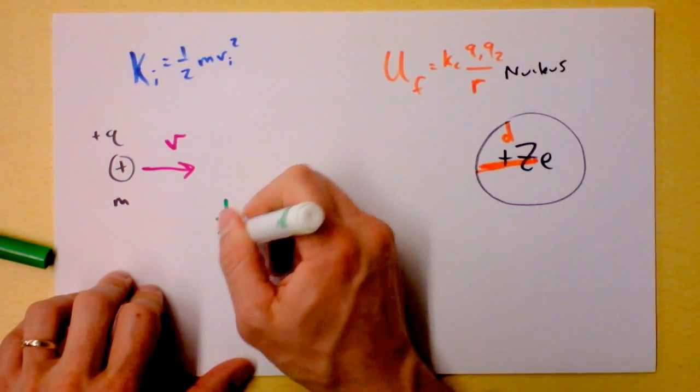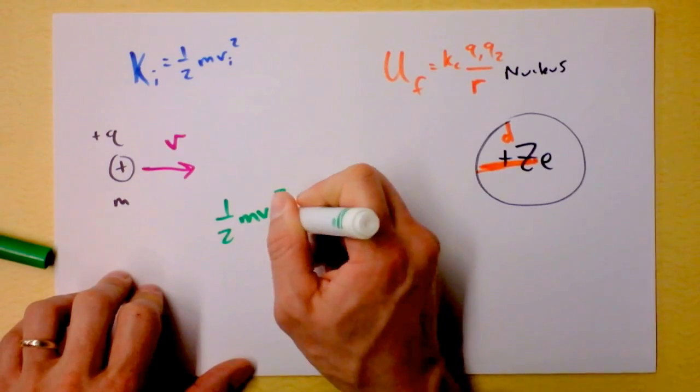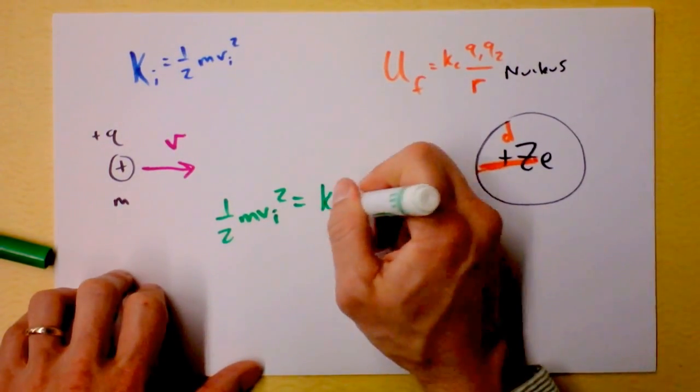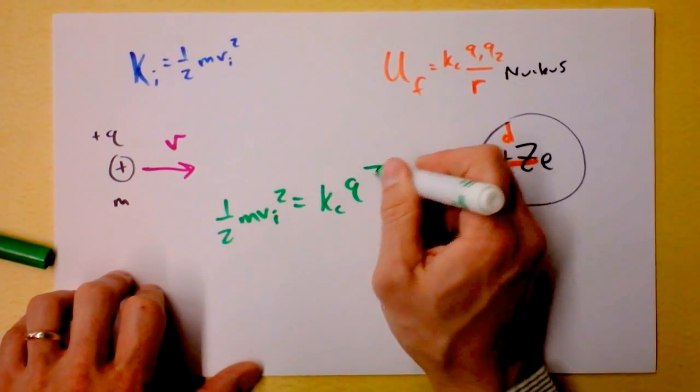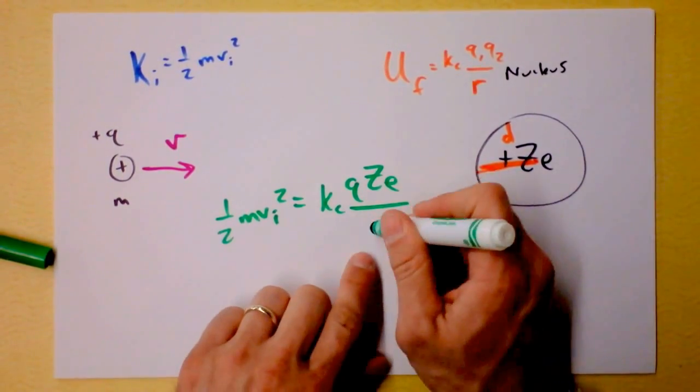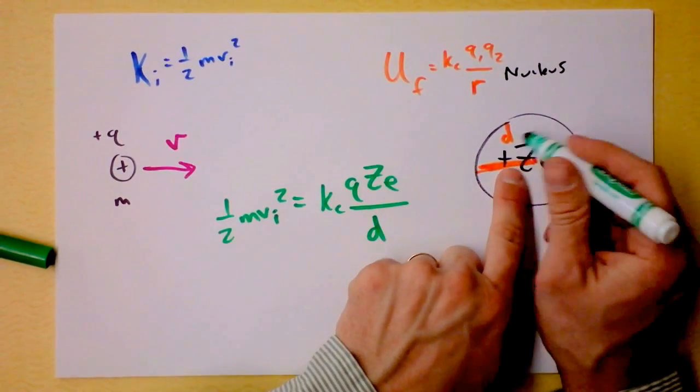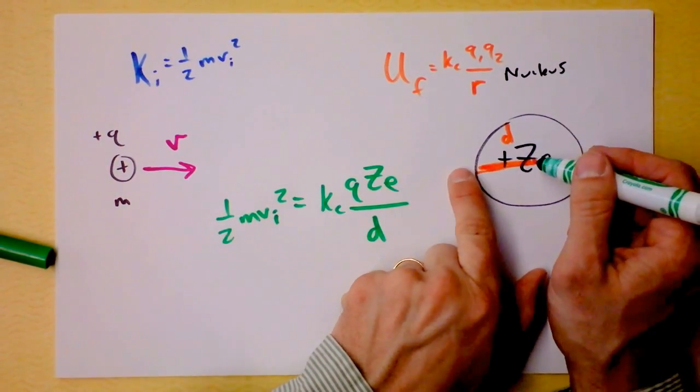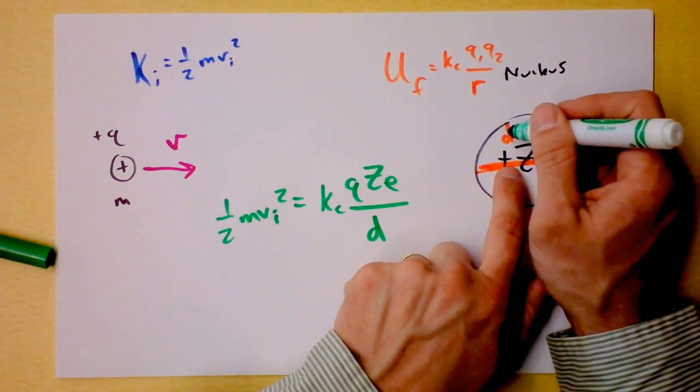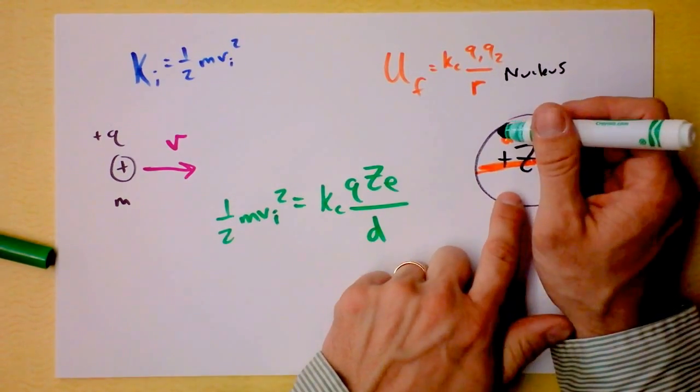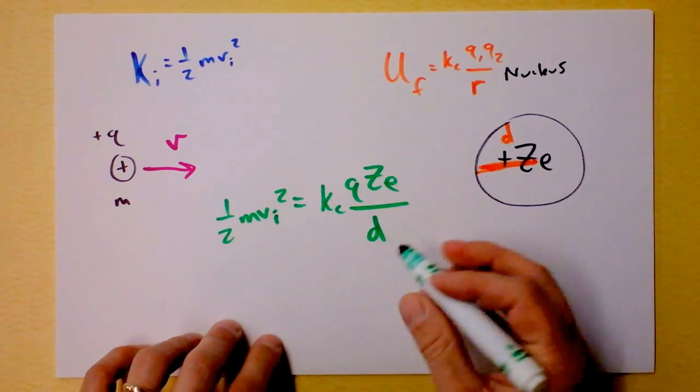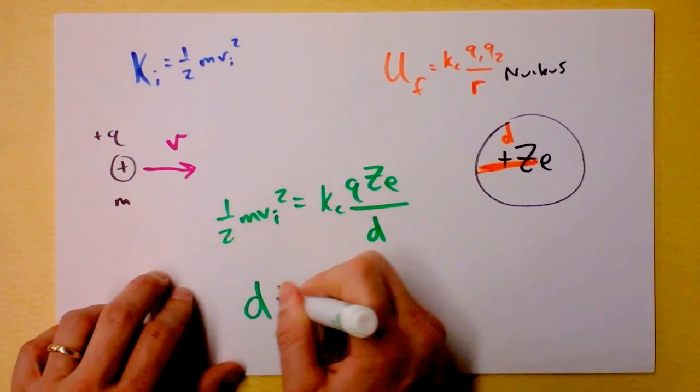So here's what we've got. We've got this, and we've got this, and I'm saying that when all of this turns into that, then we've got ourselves the size of the nucleus. Let's set it up. I'm going to say that one-half MV initial squared is, well, what's this going to be? It's going to be Kc, of course, and it's going to be Q, and it's going to be Ze on the other charge, and I'm going to divide that by the distance between the two things, which I'm saying is the upper bound on the size of the nucleus. Of course, it is the largest size the nucleus can possibly be, and the faster I shoot them in, the better I can really measure this.